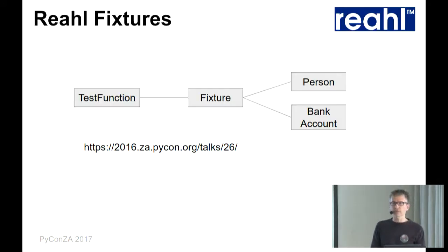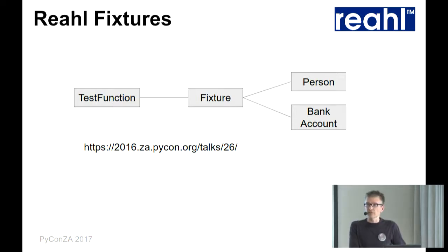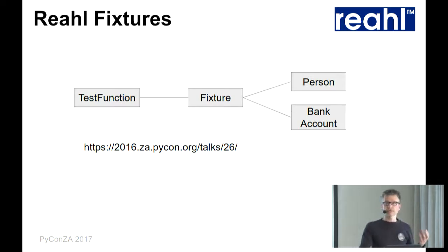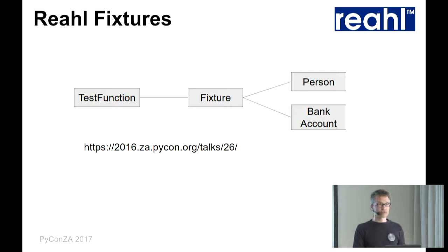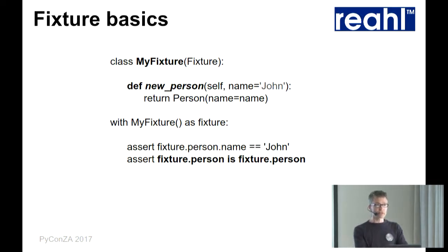I talked about this last year, giving some background on fixtures and how they relate to other things — there's a link on there for that talk if you'd like to see it. In a nutshell, what our fixtures are and what makes them different from something like PyTest fixtures is that they're actually classes that give you a collection of test objects that belong together and that you want to use in a particular test. I want to show you a little bit more detail, and then how we use them to solve interesting technical problems while testing.